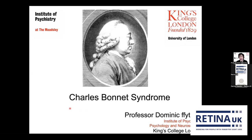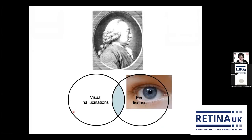My talk today is entitled Charles Bonnet Syndrome. I'm hoping that if you've registered you vaguely know what that is, but in case you're not entirely sure, I'll explain what we mean. We start with the idea that you can see things that are not actually there — that's what we mean by a visual hallucination. There are actually lots of different causes of this, and one of the causes happens to be eye disease. For reasons I'm going to show you, this is the cause we term Charles Bonnet Syndrome: visual hallucinations caused by eye disease.